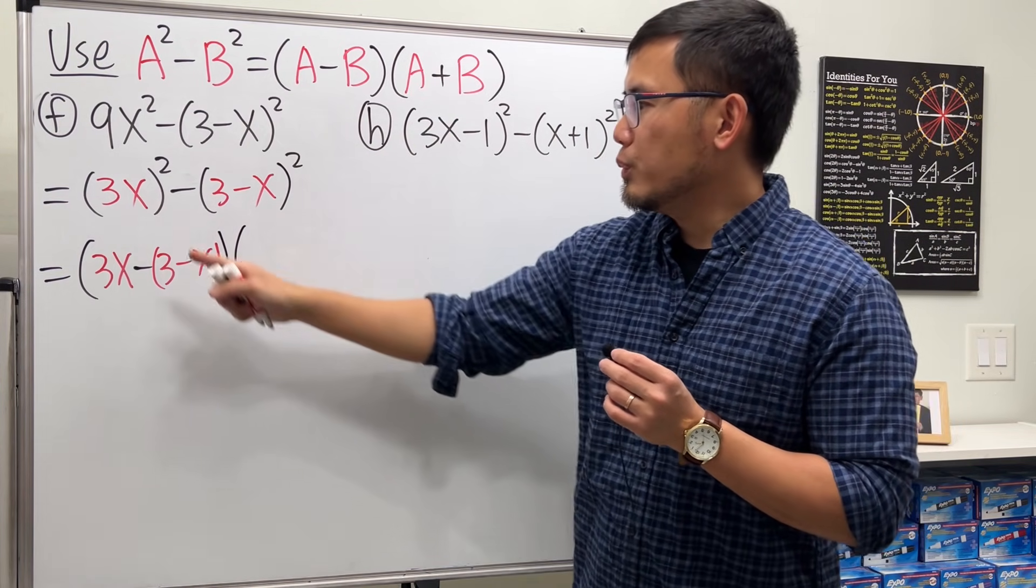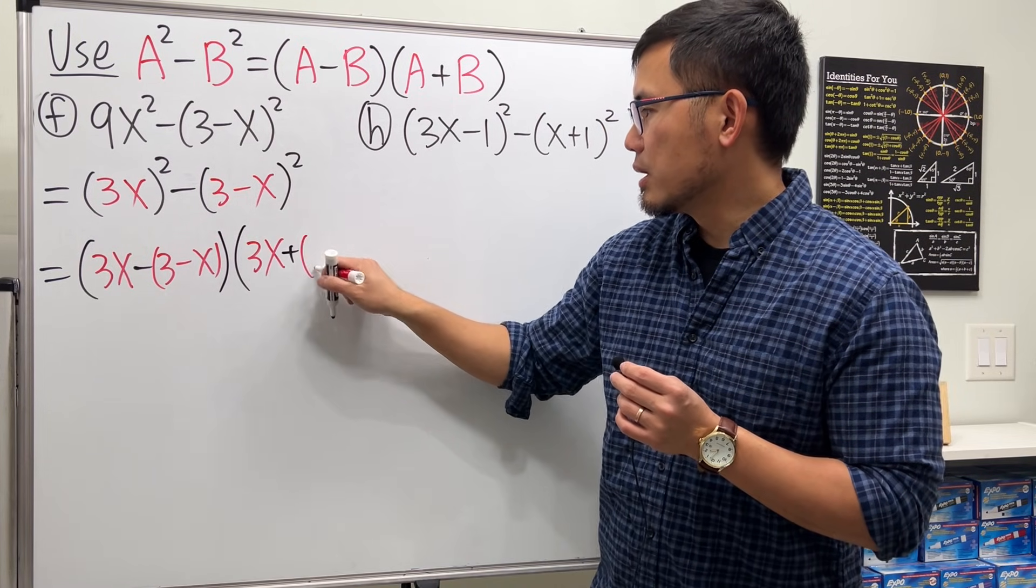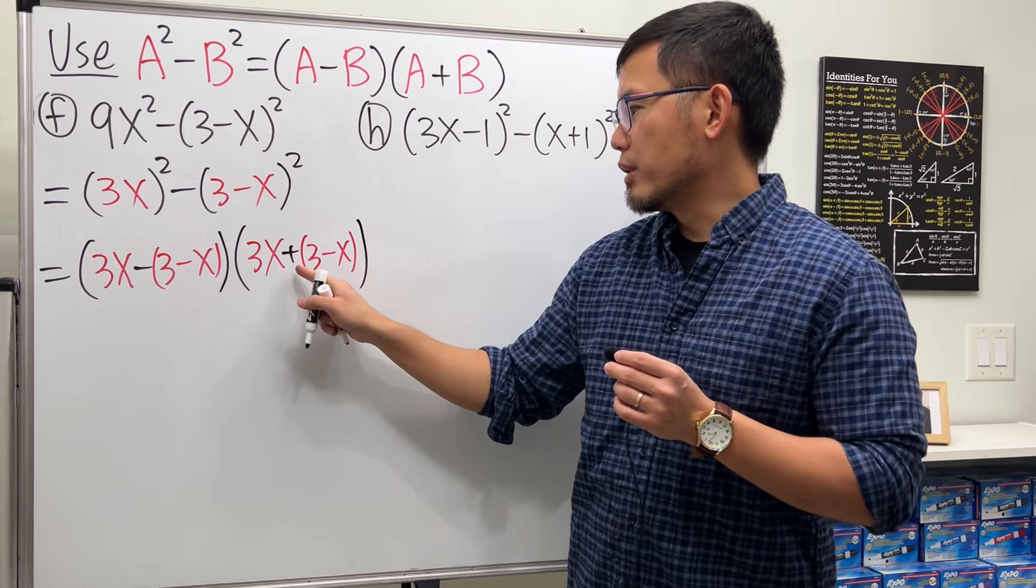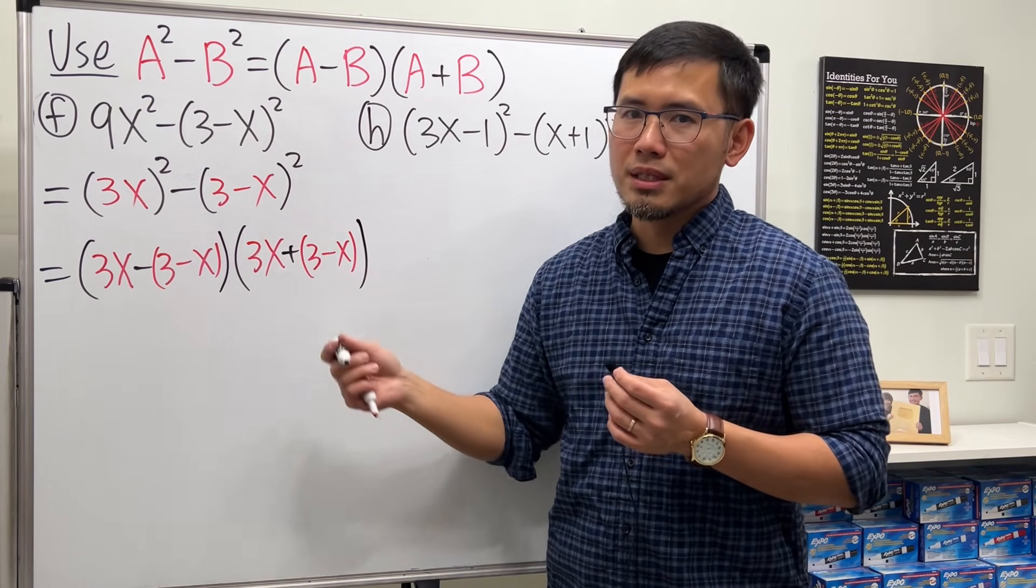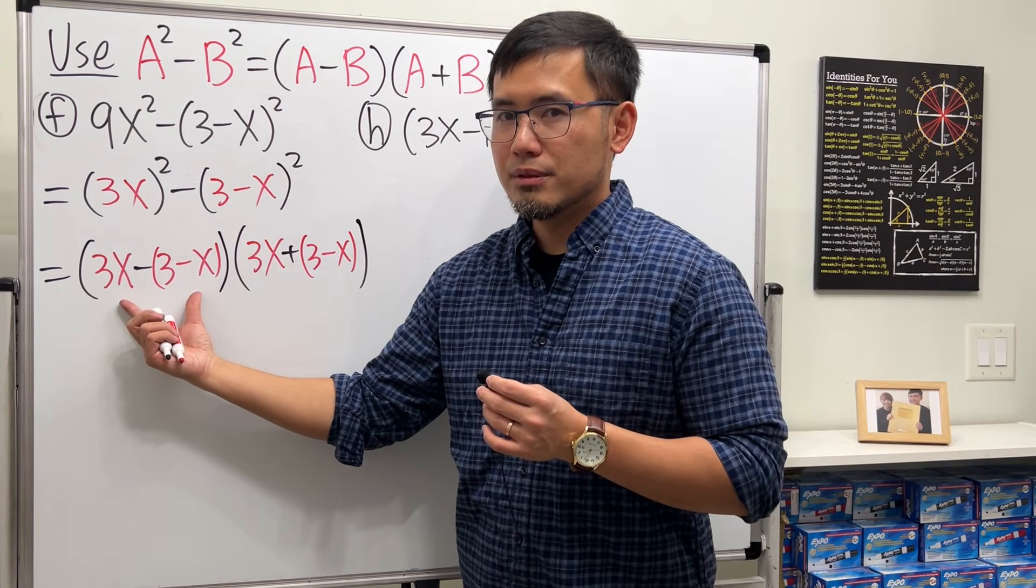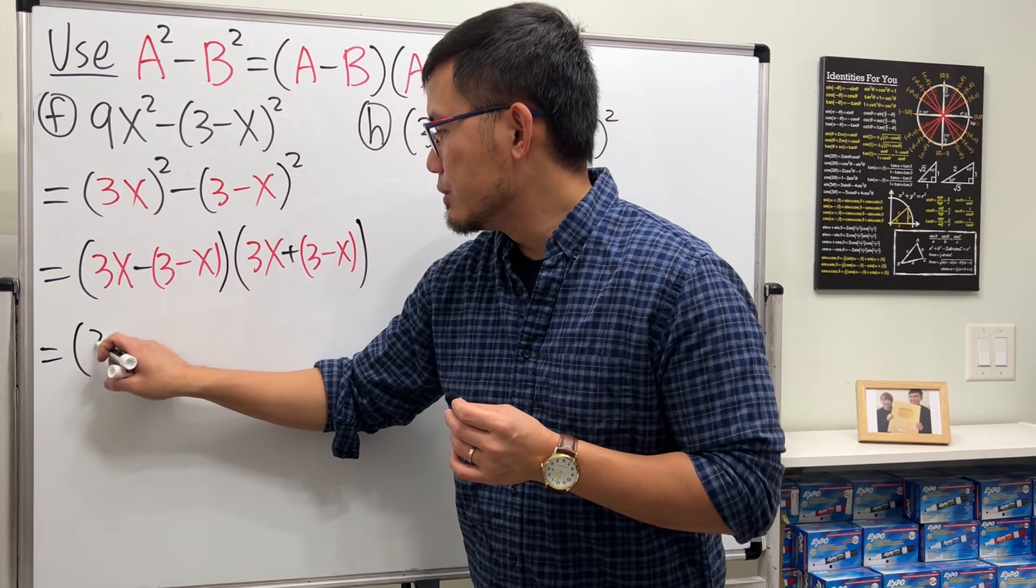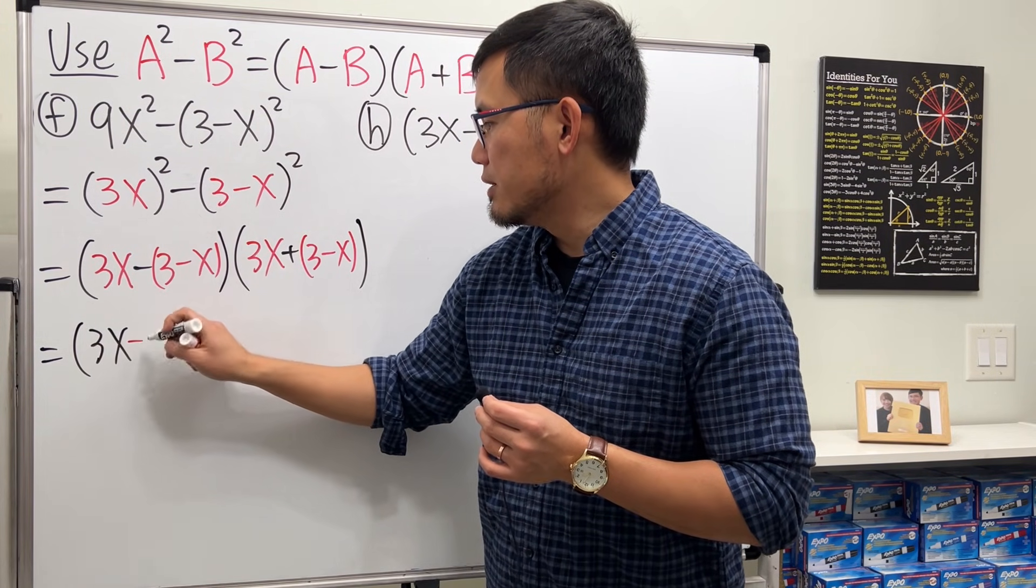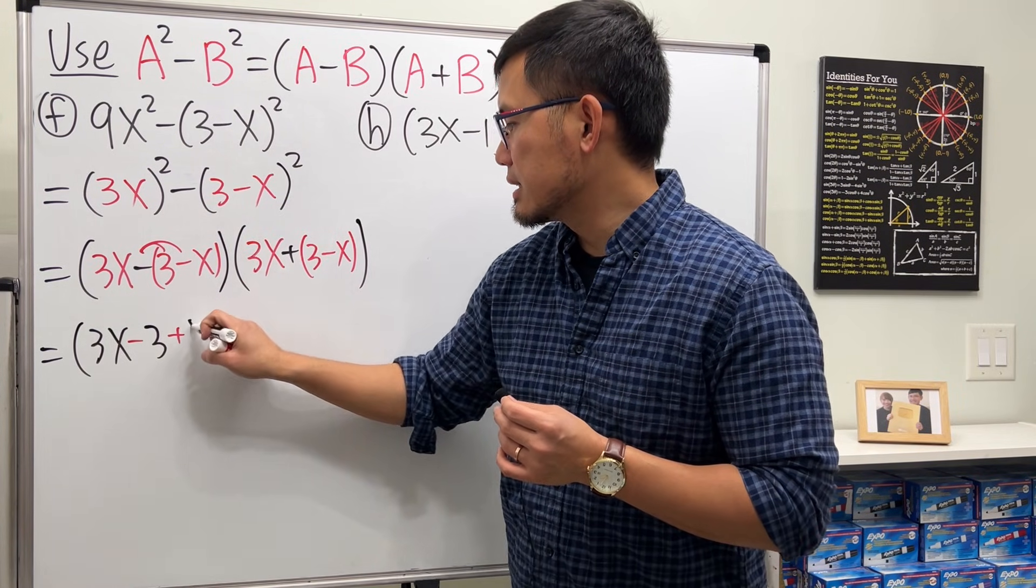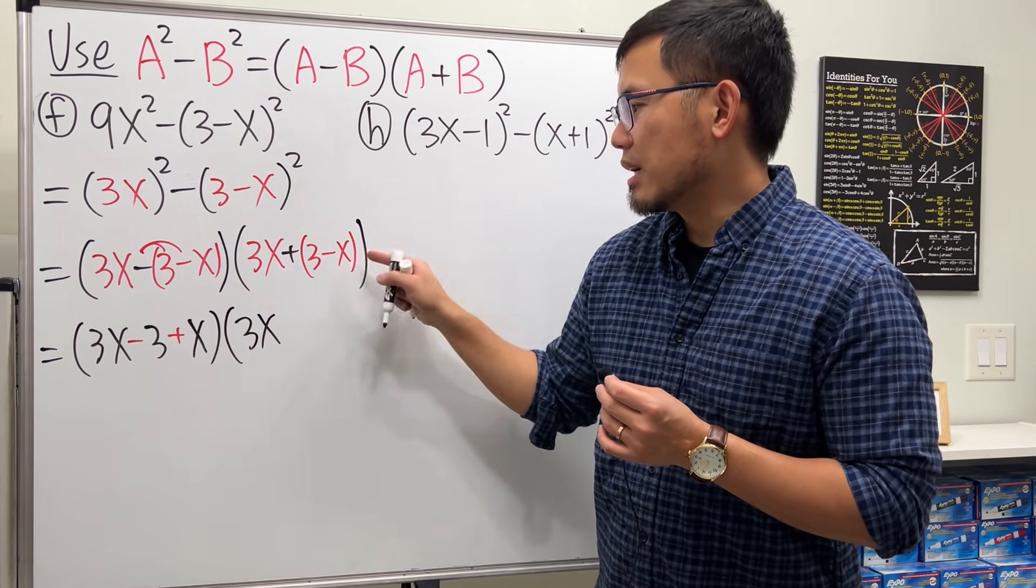We will have A plus B, which is this 3x, and then plus B again. Let's put down parentheses, 3 minus x. Even though this parenthesis doesn't matter when you distribute a positive, that's the idea. And now can we simplify this? Yes, go ahead and just work this out. We have 3x, distribute the negative, we have negative 3 and then plus x.